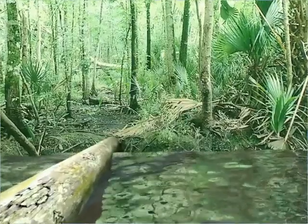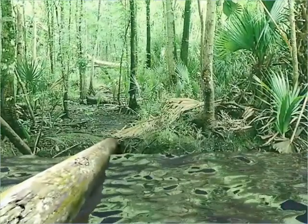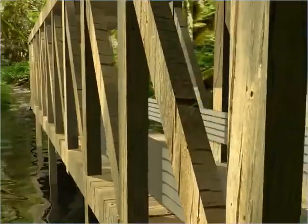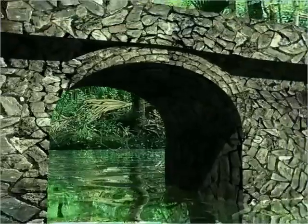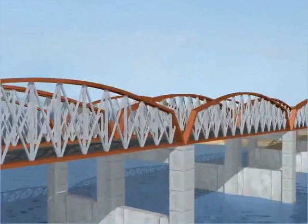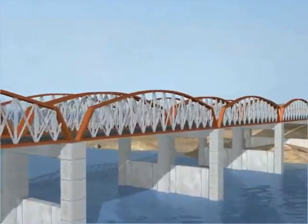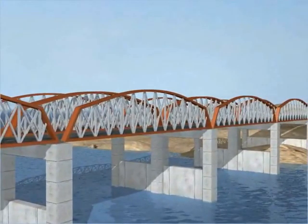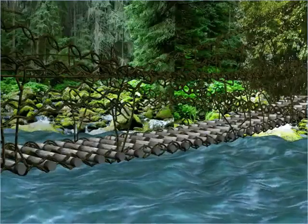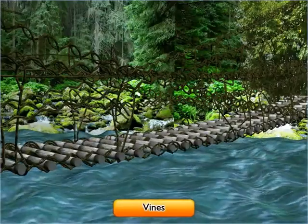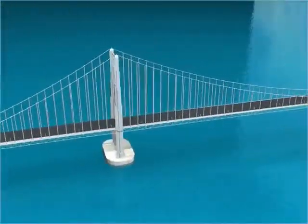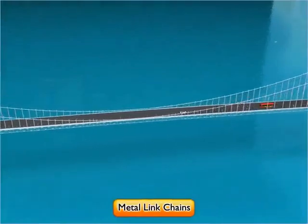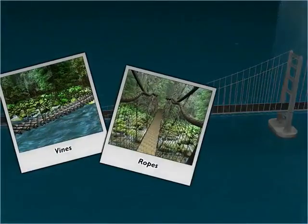Man has been using bridges since very early in history. Earlier, the main structure of bridges was made in materials such as wood and stones. Nowadays, materials like steel and concrete are used. For suspending bridges, vines were used earlier. Later, vines were replaced by ropes. Nowadays, metal link chains instead of ropes are used for suspension.